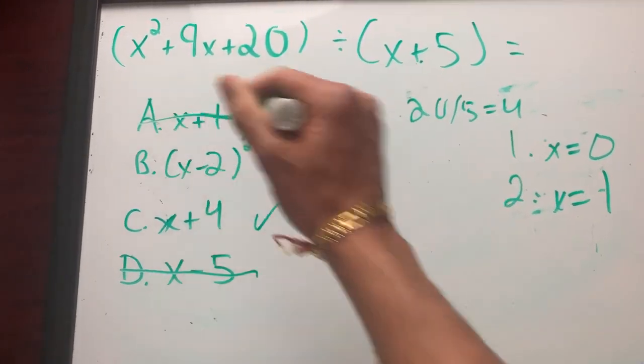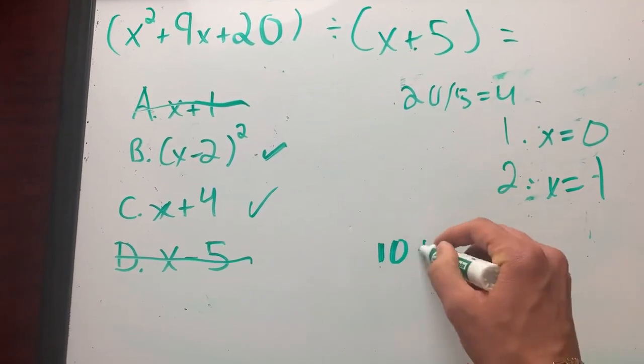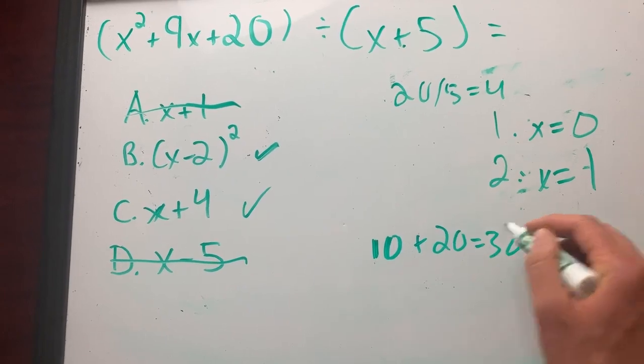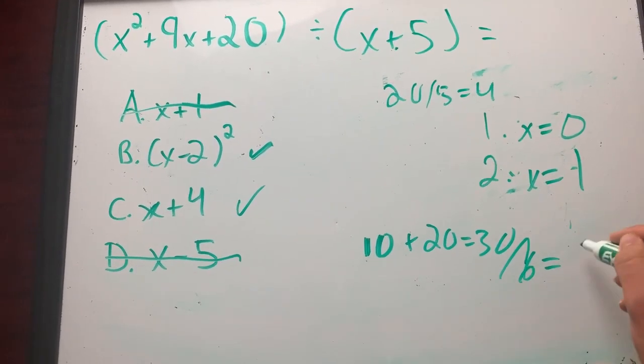Let's try x equals one. If I plug in x equals one, I get one plus nine, which is 10, plus 20, which is 30. Divided by one plus five, which is six. So it's equal to five.